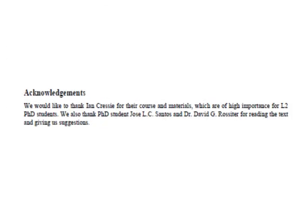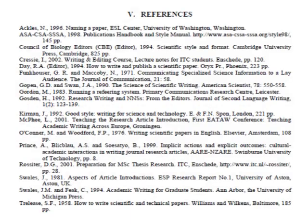Acknowledgements should be written after the conclusions and discussion section. Number five is references, which should follow Harvard style of referencing. You must cite references as per your journal's requirements, such as MLA, APA, Chicago, Harvard, or Vancouver.